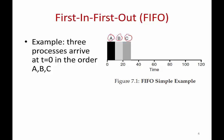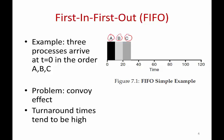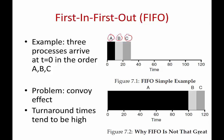Why is FIFO bad? The main issue is what is called the convoy effect — sometimes you get stuck behind a really long, fat process and your turnaround time is really bad. Process B arrived just at time T=0, just behind A, but has to wait a long time until A finishes. FIFO tends to have this issue.